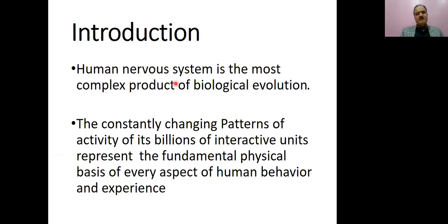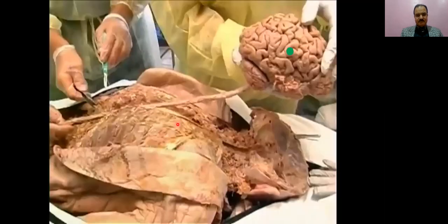The human nervous system is the most complex product of biological evolution. The constantly changing patterns of activity of its billions of interactive units represent the fundamental physical basis of every aspect of human behavior. This is the dissected brain and attached spinal cord, which comprises the central nervous system. From the brain the cranial nerves emerge, and from the spinal cord spinal nerves emerge, which innervate the whole body.